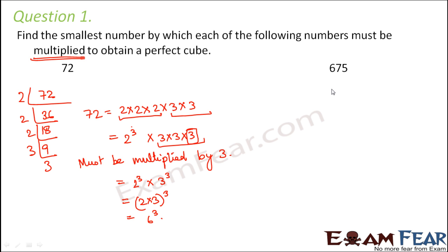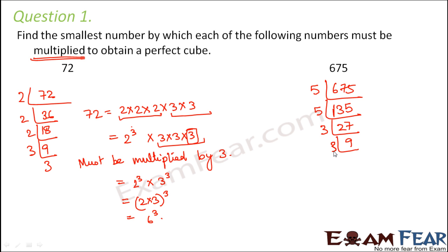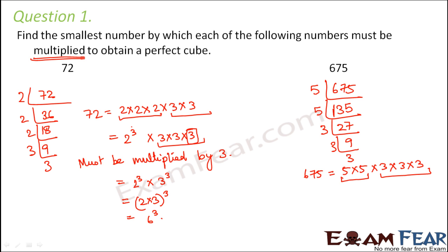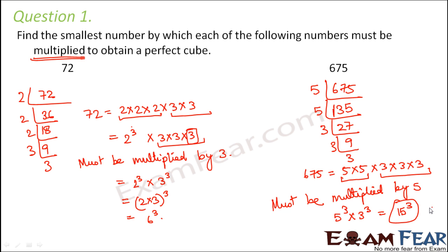Similarly, let's look at the second number, 675. First perform prime factorization — it is completely divisible by 5. So 675 can be written as 5 × 5 × 3 × 3 × 3. When we divide into groups of 3, 3 occurs 3 times but 5 occurs only 2 times. So we need to multiply it by 5. If we multiply by 5, we get 5 cubed into 3 cubed, which is equal to 15 cubed. So this will then become a perfect cube.